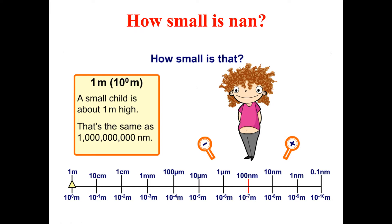Let me be a bit more specific about nano. You can consider the example of a child, as seen in this particular figure. The height of this child is about one meter. If you convert that one meter into nanometers, it would equal one billion nanometers. That is how you convert the scale.